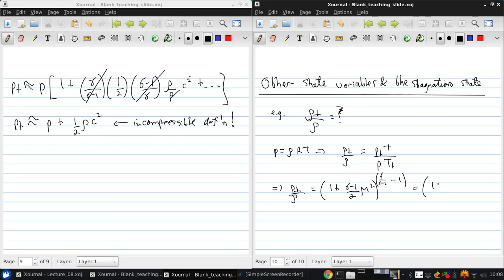Which is 1 plus gamma minus 1 over 2 M squared to the 1 over gamma minus 1. So you can define these stagnation ratios, stagnation to static quantity ratios for other properties as well.